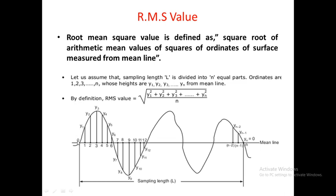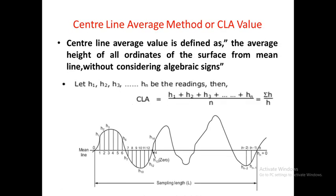To summarize the RMS method: first, divide the mean line into N equal divisions; then find the height of the ordinates Y1 to YN at each point on the profile; square all the values Y1² through YN²; add all the squared values and divide by the number of divisions N to get the mean of the squares; then take the square root of that mean value to get the RMS roughness value.